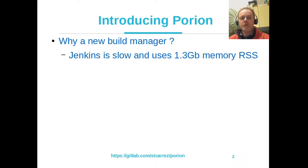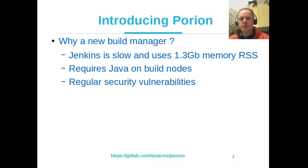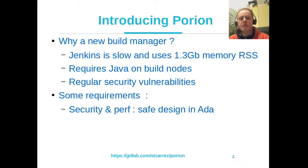More annoying is the fact that Jenkins requires Java on build nodes. The Java Virtual Machine must also be quite recent and up-to-date with the Jenkins server. Jenkins suffers from several security vulnerabilities, which means you have to update your server regularly. I decided it was time to get rid of Jenkins and write a build manager fully in ADA. The main requirement is security and performance.